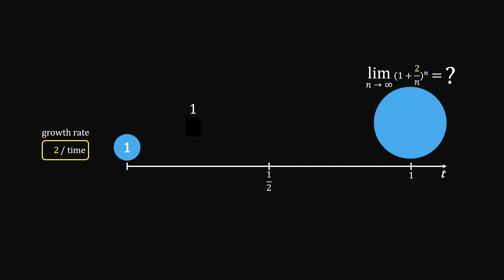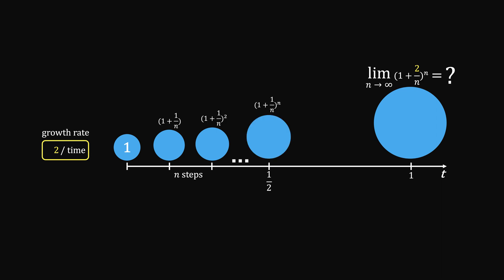Then we can think of dividing that half unit time into n intervals. At each step, it grows by 1 plus 1 over n. So we would again end up with this term, but at half unit time.